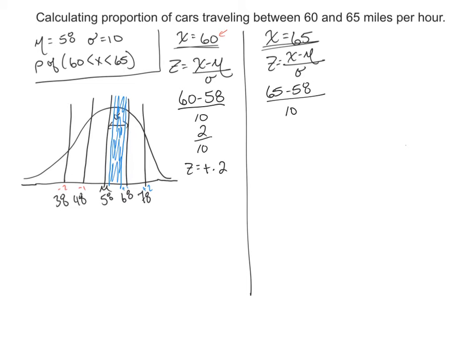And so now we have 7 divided by 10. Or z equals positive .7.